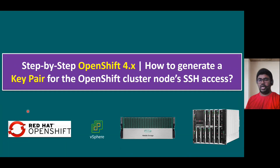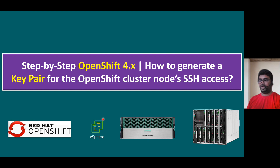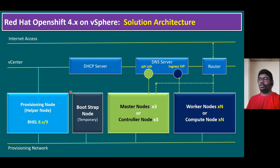In this session, I'm going to talk about the step-by-step OpenShift 4.x deployment process. One of the key points in the implementation process is we have to generate a key pair on our OpenShift helper node. In our lab environment, we are going to install Red Hat OpenShift running with vSphere and Nimble shared storage, and ESX is running on Synergy compute nodes. Let's quickly recap our solution architecture for Red Hat OpenShift 4.x on vSphere.